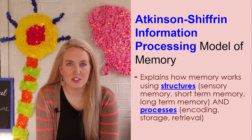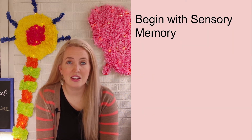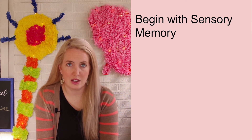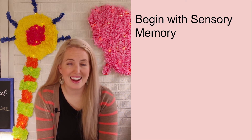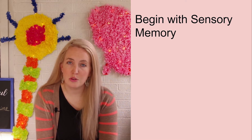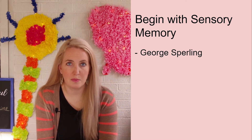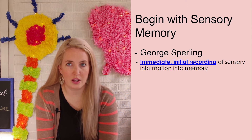Let's go ahead and get started with the first box of the three-box model, and that is sensory memory. This is the first step of the memory process, where information comes in from the outside world. Everything that we come into contact with is essentially our sensory memory. Sensory memory was coined by a psychologist by the name of George Sperling, and he found that we have immediate and initial recordings of sensory information into our memory.